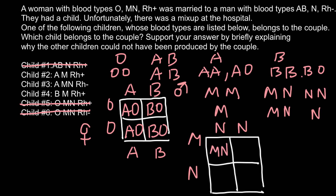From the Punnett square, 50% of the progeny would belong to blood group MN and 50% to blood group N. We do not see blood group M in the progeny, so we can cross out child number 4, who belongs to blood group M — which is not possible. We also cross out child number 2 for the same reason. We are now left with only one answer: child number 3. But let's also check the Rh blood group.